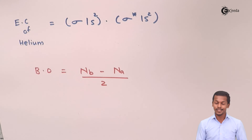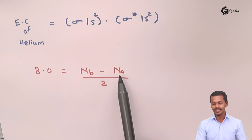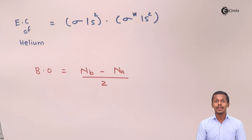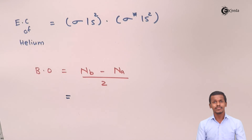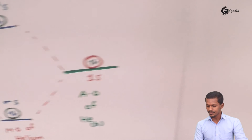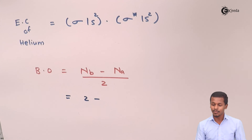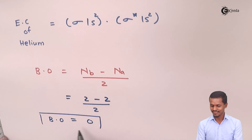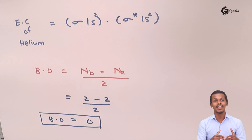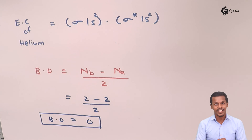Now for the bond order: bond order = (Nb − Na) / 2, where Nb is the number of bonding electrons and Na is the number of anti-bonding electrons. From the molecular orbital diagram of helium, the number of electrons in the bonding orbital is 2 and in the anti-bonding orbital is also 2, giving a bond order of (2 − 2) / 2 = 0. This indicates there is no bond between the two helium atoms, confirming that helium does not form a molecule and remains in its atomic state.